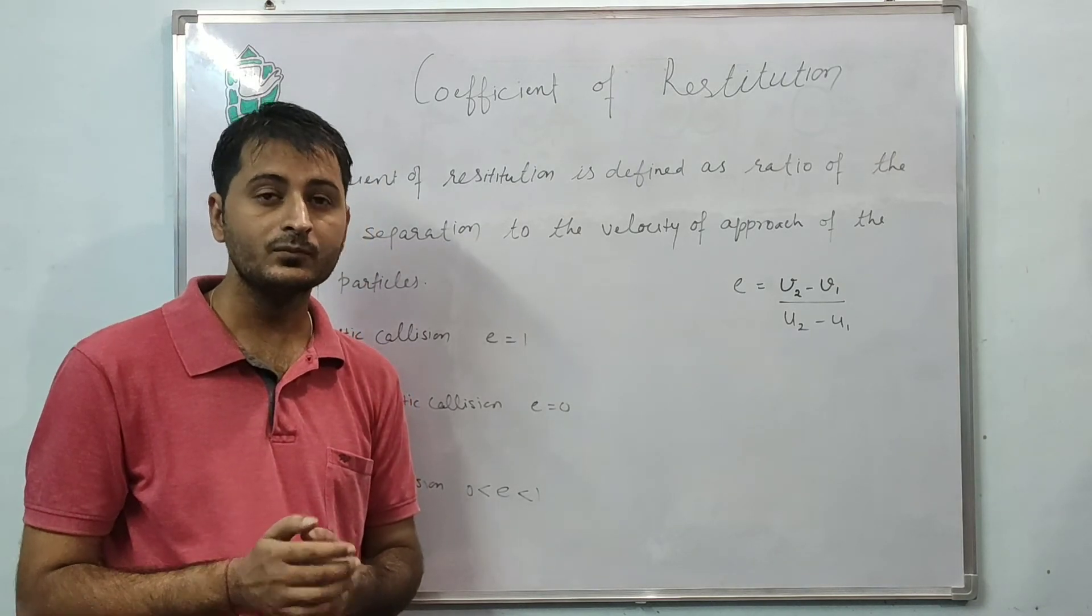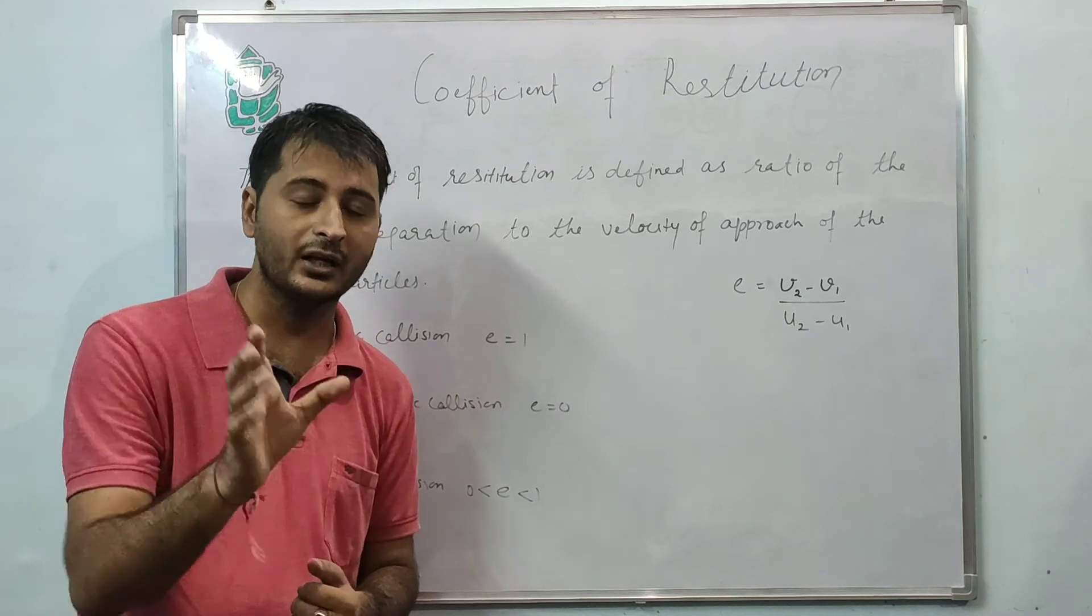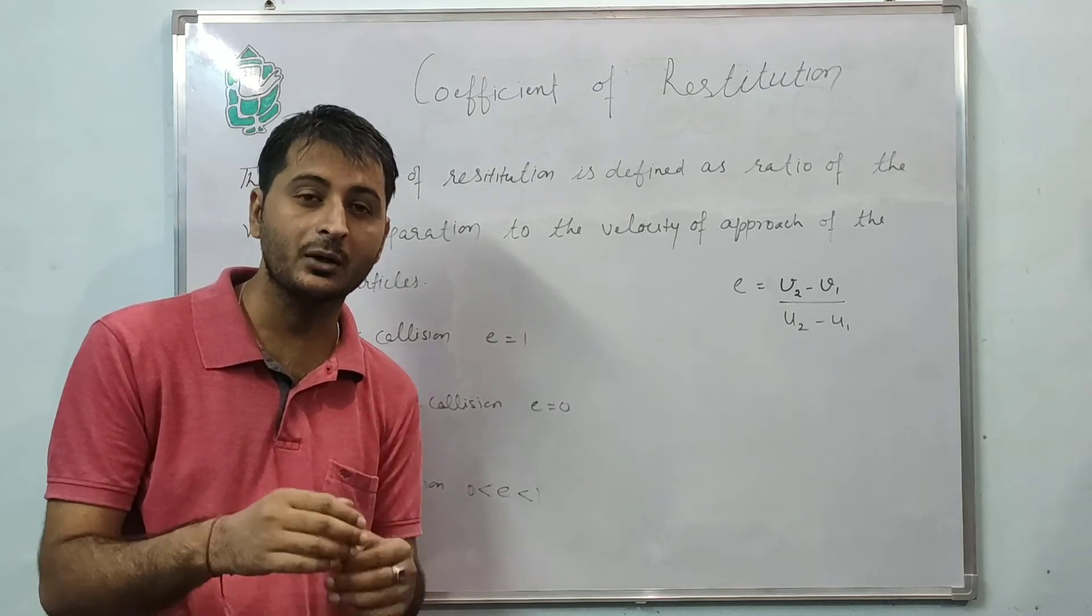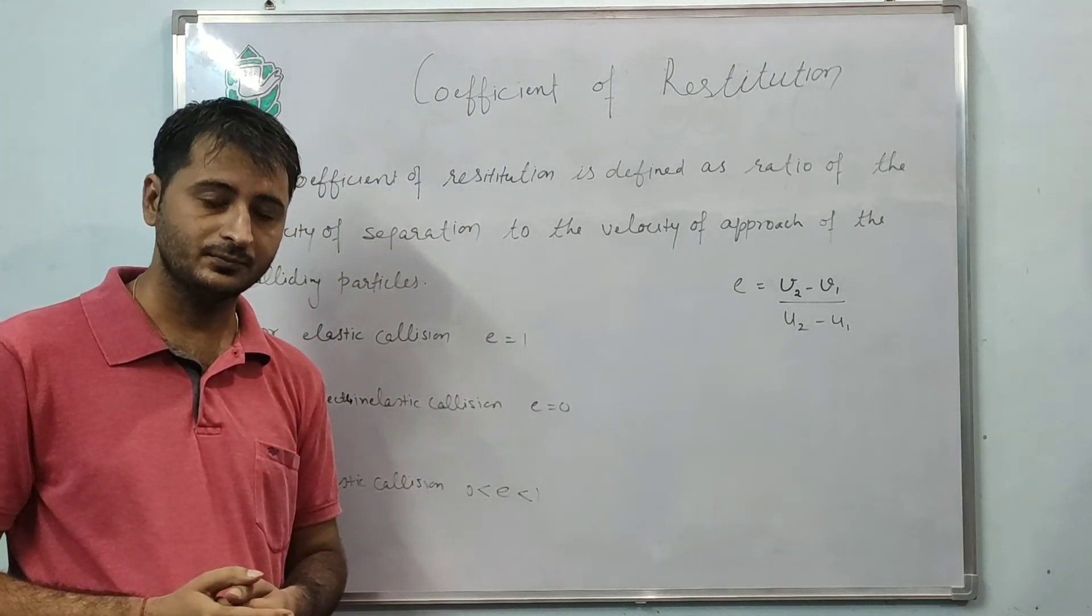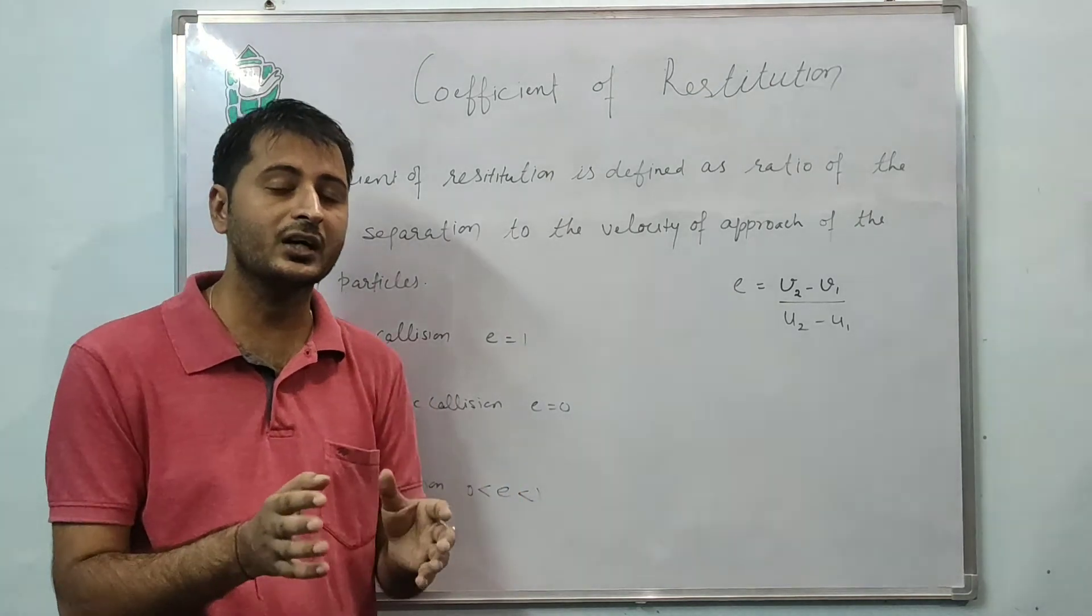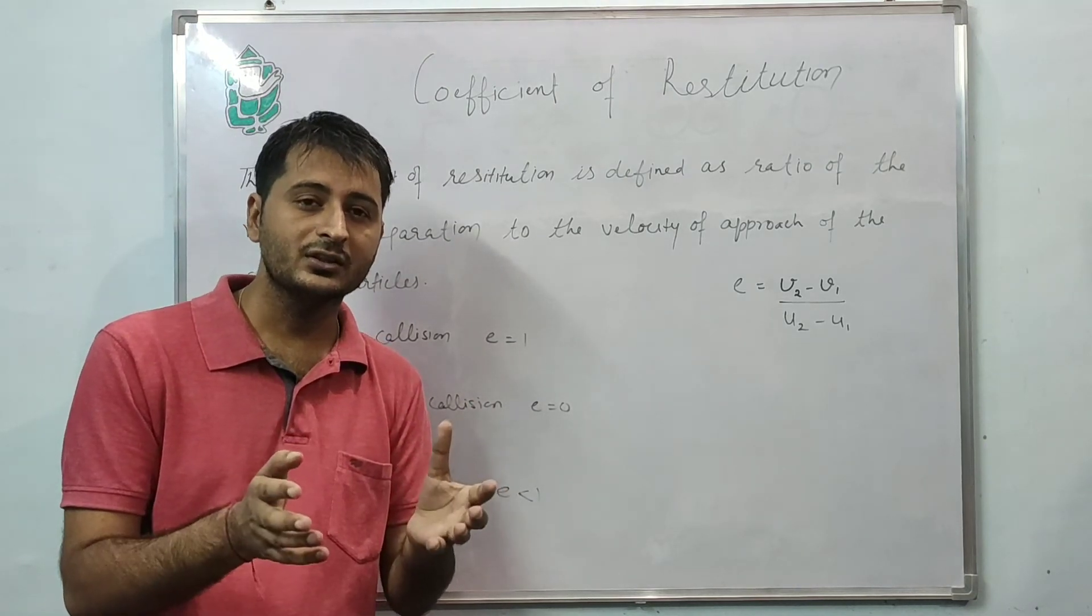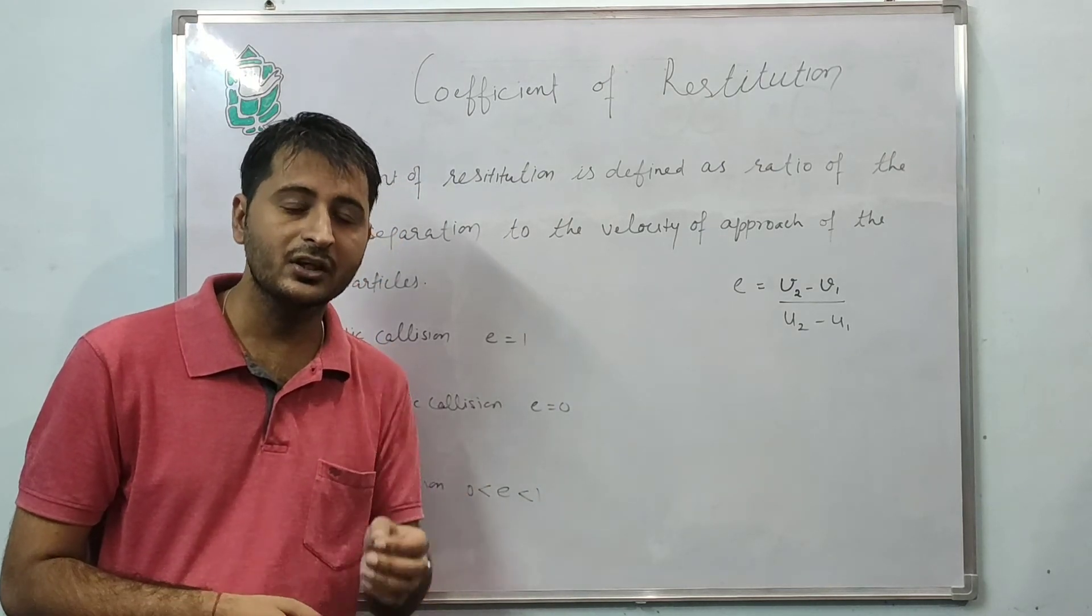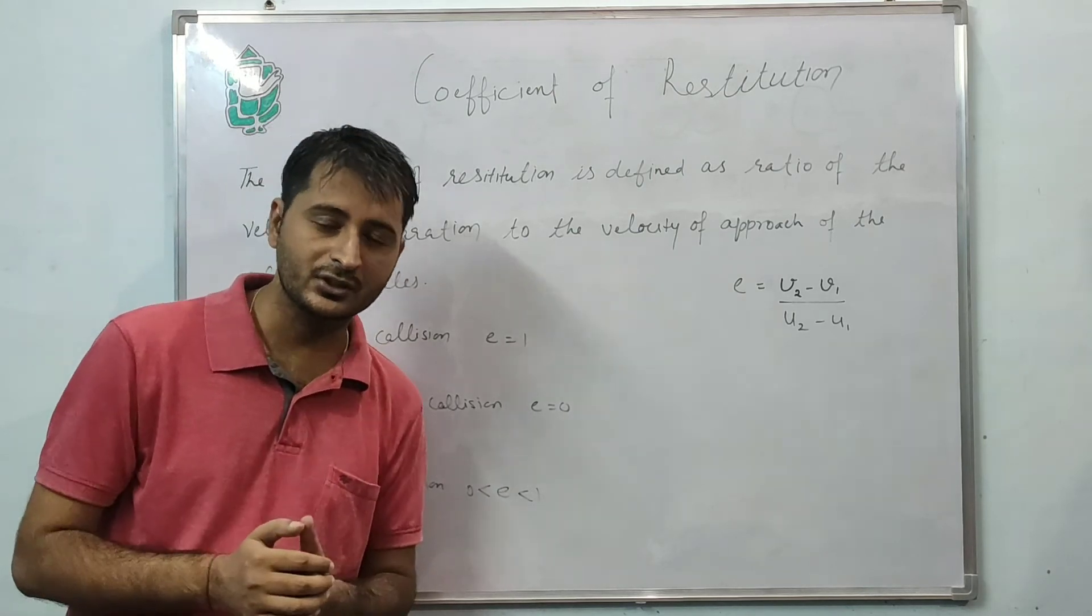If the value of e is between 0 and 1, we call it inelastic collision. So with these three values, we can define which category a collision falls into: whether it is elastic collision, inelastic collision, or perfectly inelastic collision.